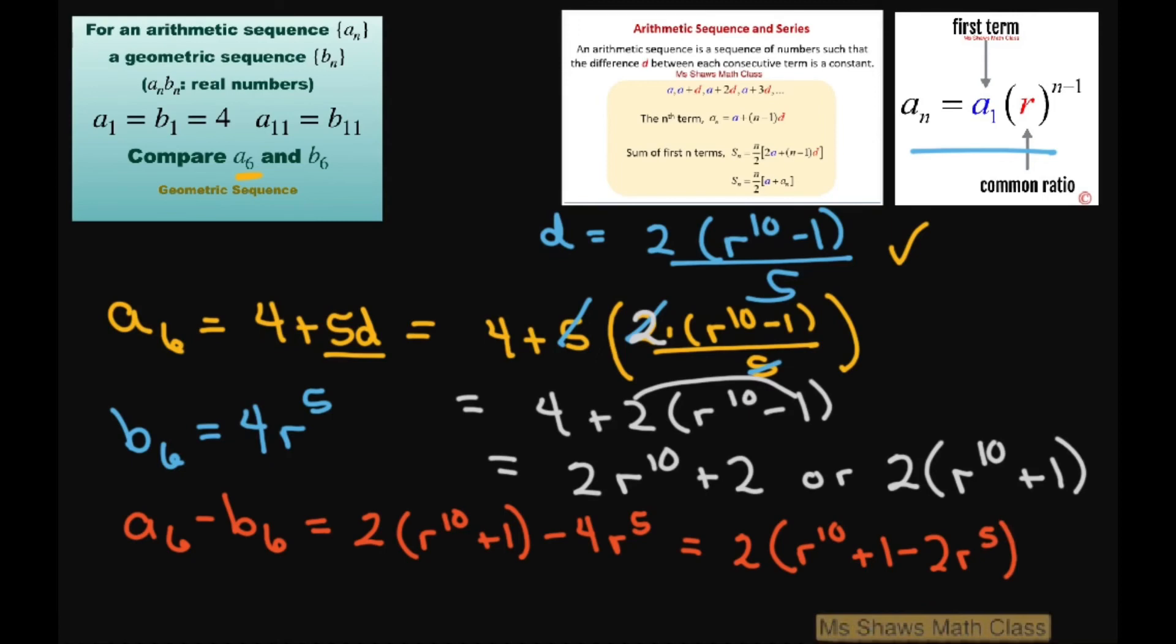So this is going to equal 2, if you simplify this part, this is going to be 2 times (r^5 minus 1) squared.